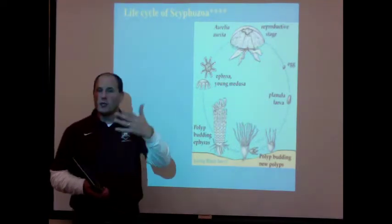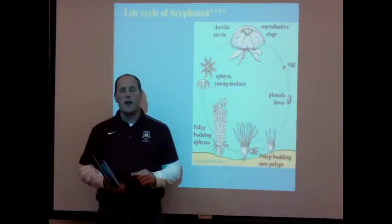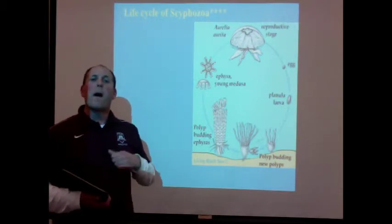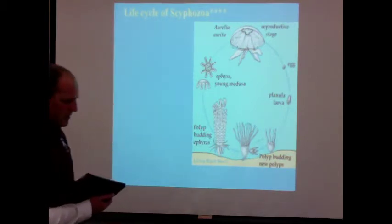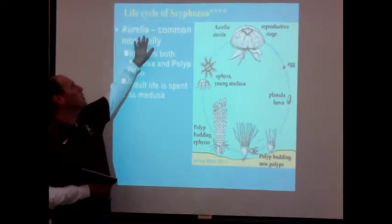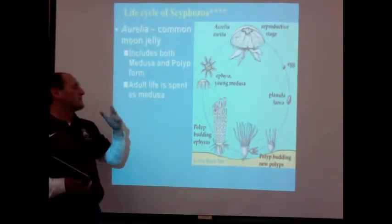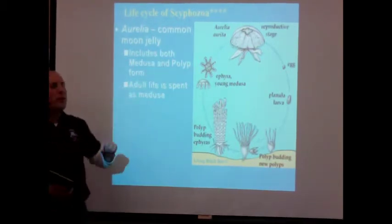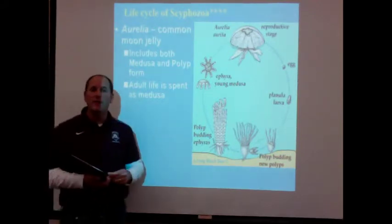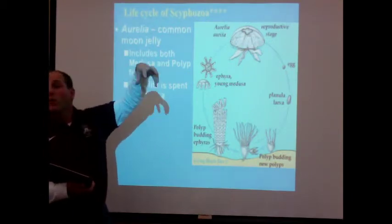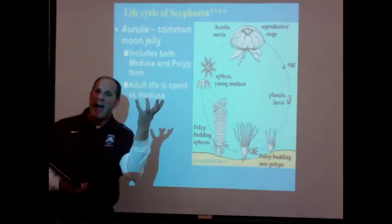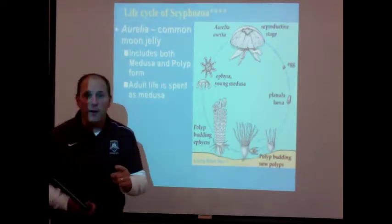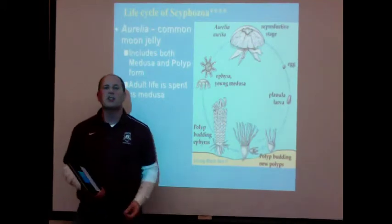A little bit about these organisms: they have all the main characteristics of Cnidaria, but one unique thing you should be aware of about the jellies is their life cycle — how these guys actually live. We'll look at one in particular called Aurelia, the common moon jelly, a very common organism. These include both a medusa and a polyp form in their life cycle. Some time is spent swimming as the bell shape, some time as the vase-shaped polyp. Their adult life is spent as the medusa, and that is the form where sexual reproduction occurs.